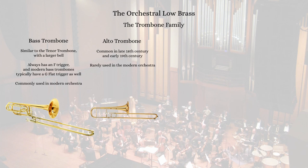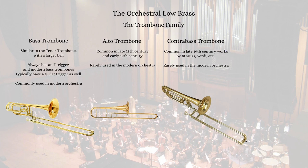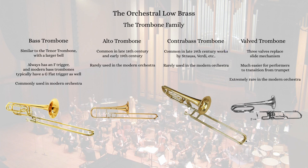The alto trombone has a smaller bell and a more narrow bore, and excels in its upper range. This instrument was especially common in the early 19th century. The contrabass trombone was called upon towards the end of the 19th century by composers like Strauss and Verdi, and continued to be used on occasion by European composers into the early 20th century. The valved trombone is essentially a tenor trombone in which the slide mechanism is replaced by three valves. It's extremely rare, especially in the United States, but on occasion it's found in bands and jazz ensembles, with the advantage being that trumpet players have a much easier time transitioning to valve trombone than to slide trombone.